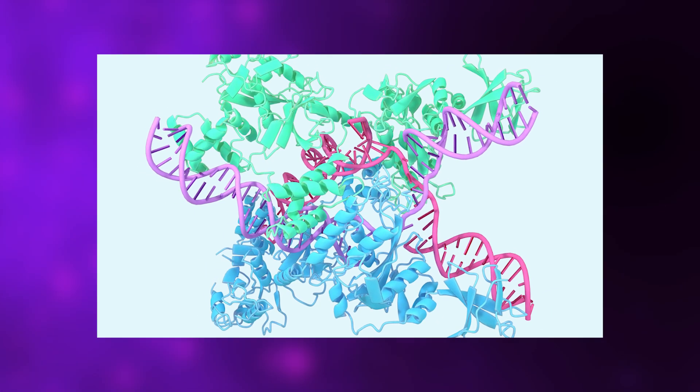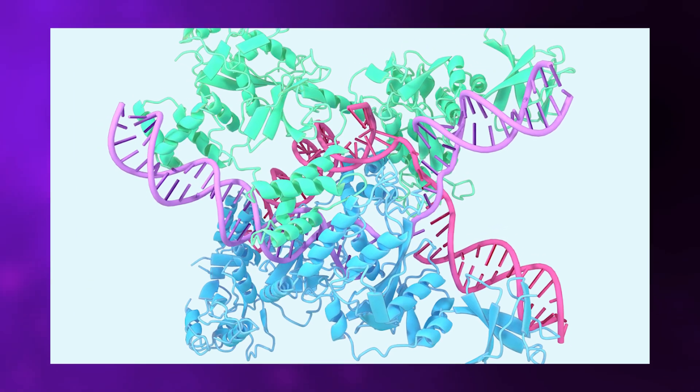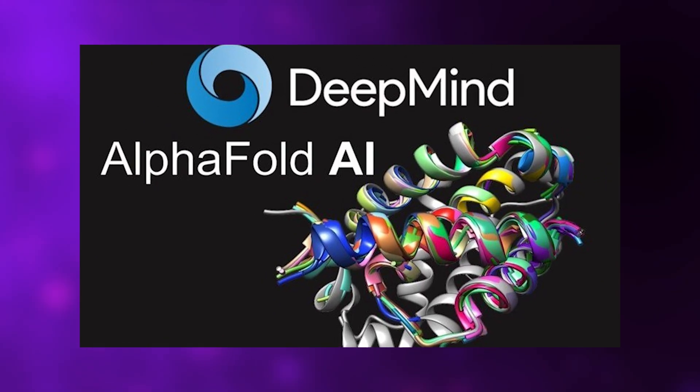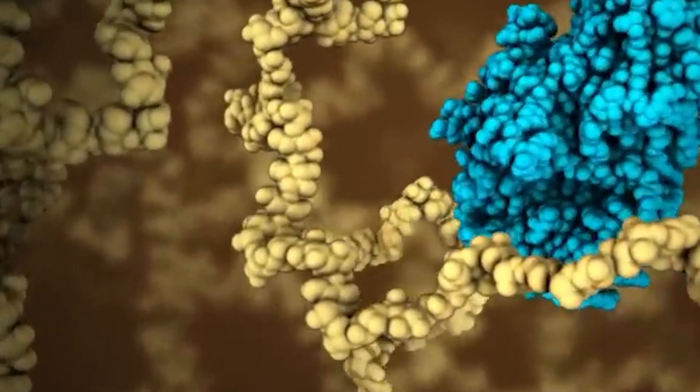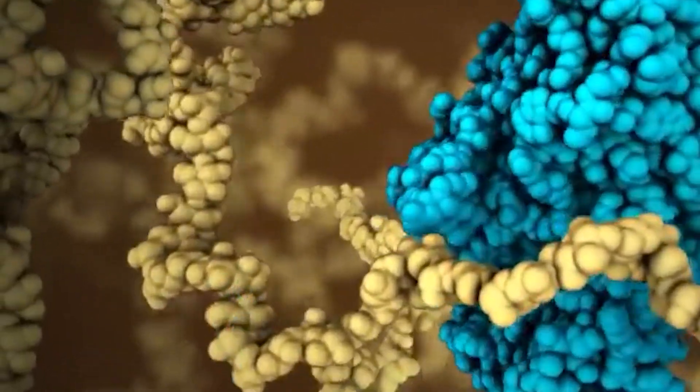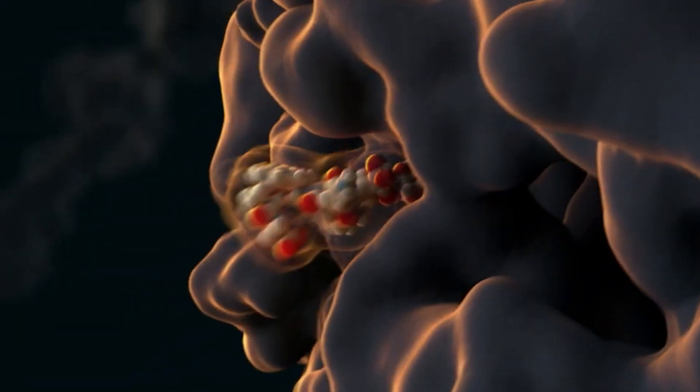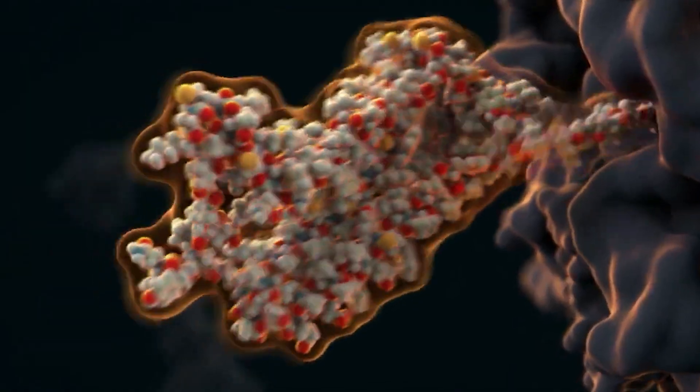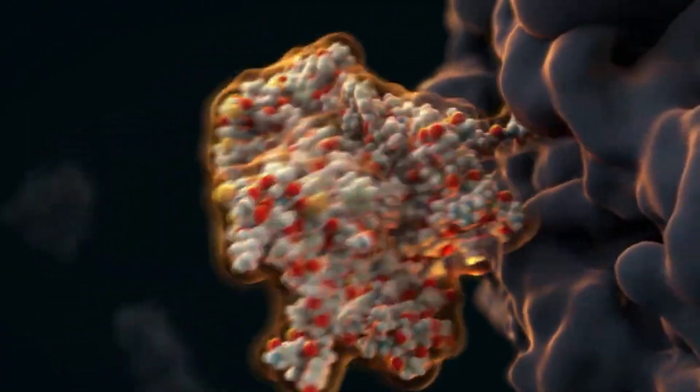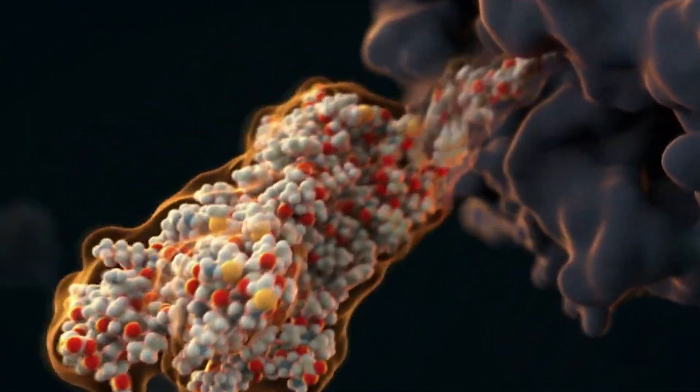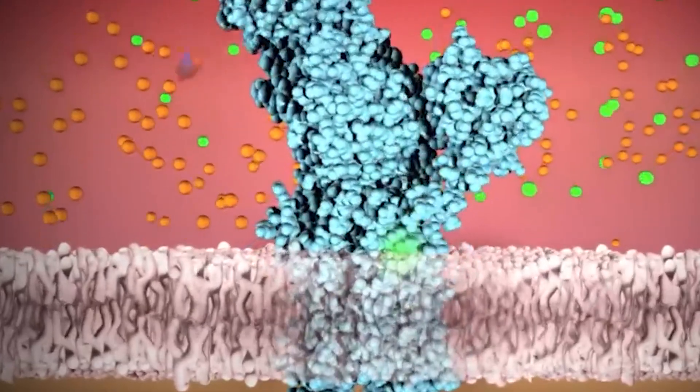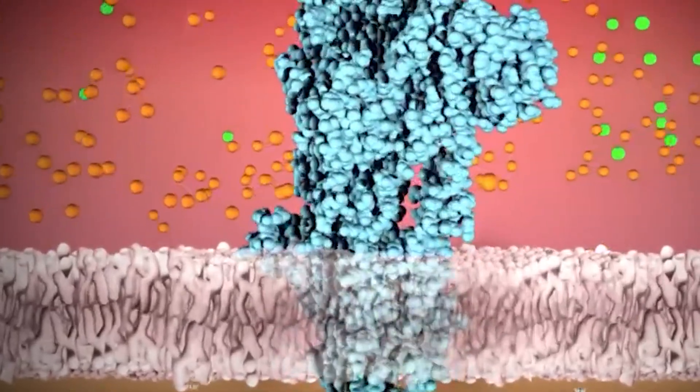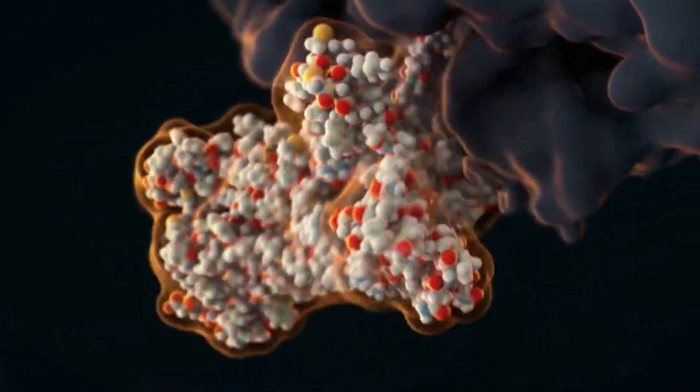That changed when DeepMind released AlphaFold in 2020. It reached near-experimental accuracy during the CASP-14 Protein Prediction Challenge, surprising researchers around the world. Since then, AlphaFold models have predicted structures for more than 200 million proteins from publicly available genomic databases. That number covers almost every known protein found in nature. And with AlphaFold 3, the system can now model full molecular complexes, which means it can predict how proteins interact with DNA, RNA, and small molecules.